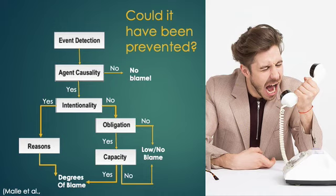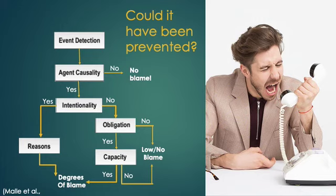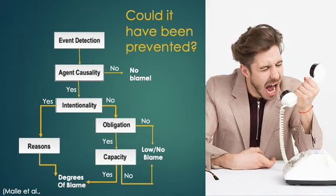If a person accidentally caused a norm-violating event and had no obligation to prevent it, they are likely assigned low or no blame. If the person unintentionally caused a norm-violating event but did have an obligation to prevent it, the model says people will consider capacity — did they have the capacity to actually fulfill their obligation? If they didn't — for example, if they were physically unable — then they're likely assigned low or no blame, or if they were prevented or forced from fulfilling their obligation.